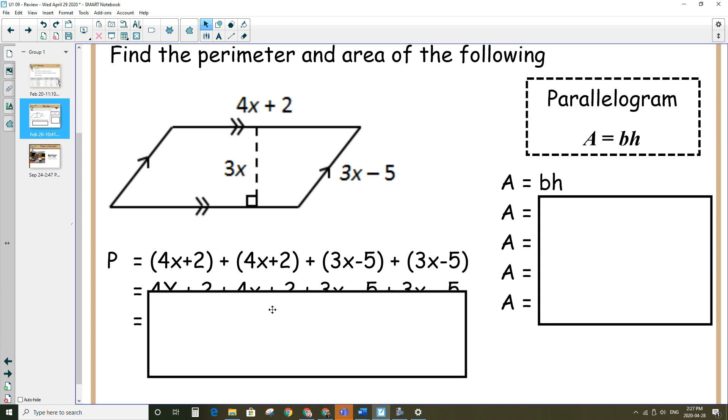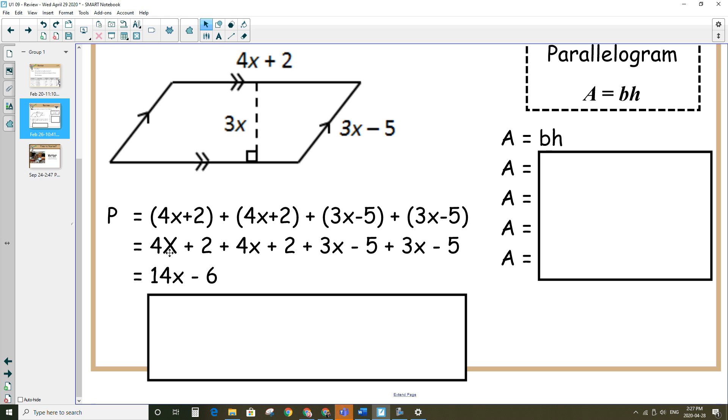Now I can collect like terms or add the monomials. We've got several monomials here that we're adding together. So I added up all the x's. So 4x plus 4x plus 3x plus 3x is going to give me 14x. And then 2 plus 2 is 4 minus 5 is negative 1 minus 5 is negative 6.